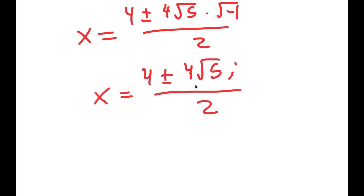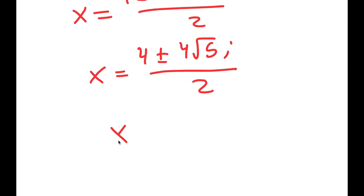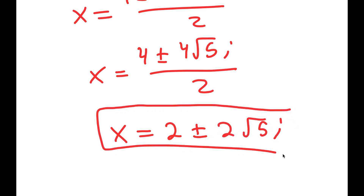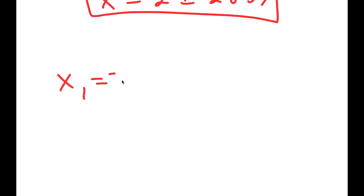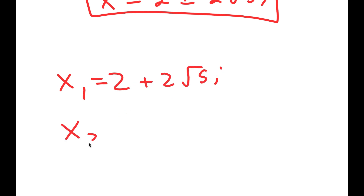Dividing both terms by 2, I get x is equal to 2 plus or minus 2 root 5i. So this means I have two solutions for x: x equals 2 plus 2 root 5i, and x equals 2 minus 2 root 5i.